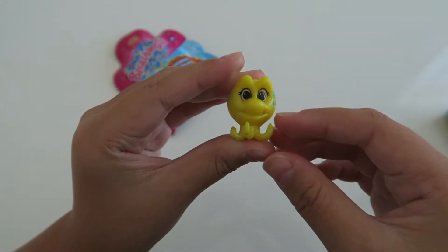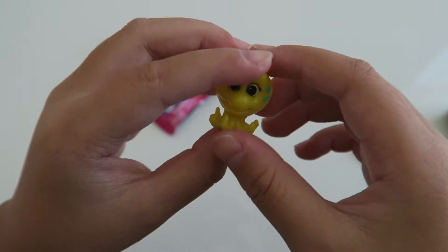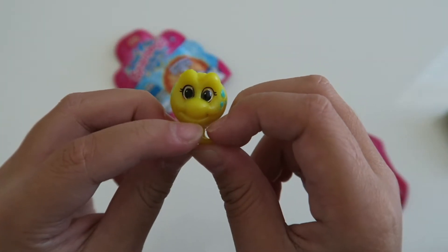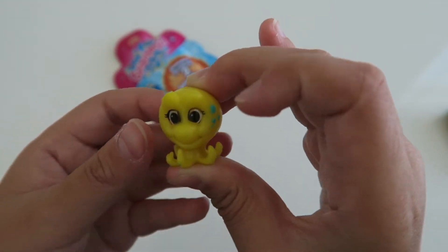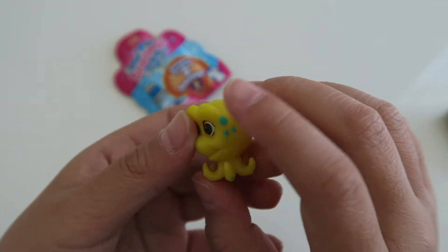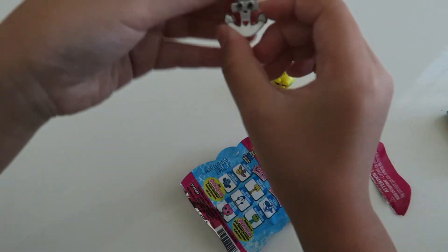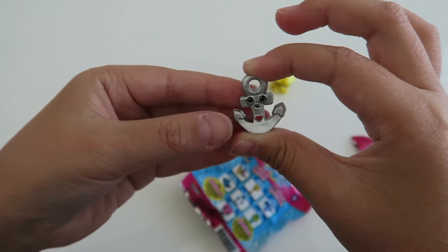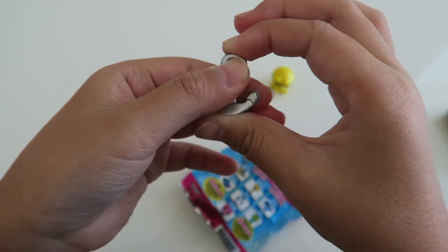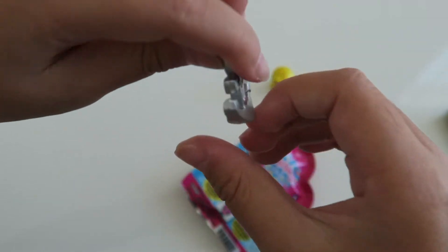So we got Ellie 8 and she is an octopus. She is a common and she is from the Wiggles section. She's so cute. She has like spots right here. On to the next one. So we got this little anchor again. Her name is Amy Anchors and she is an ultra rare. It's all silver. This is so cool.